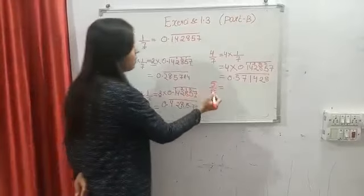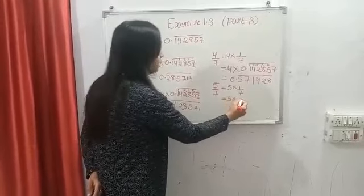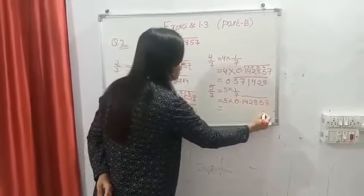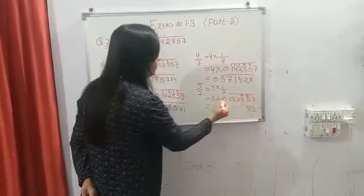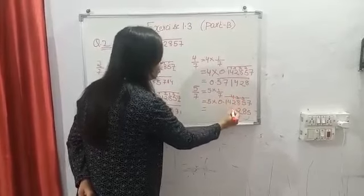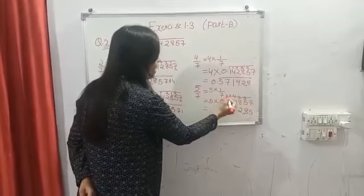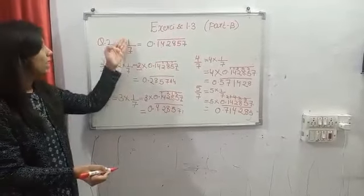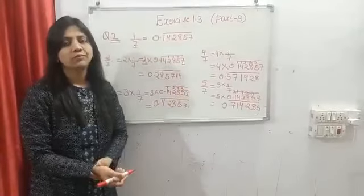The last one is 5 by 7, which equals 5 multiplied by 0.142857 bar. 5 times 7 is 35, write 5 carry 3; 5 times 5 is 25 plus 3 is 28, write 8 carry 2; 5 times 8 is 40 plus 2 is 42; 5 times 2 is 10 plus 4 is 14; 5 times 4 is 20 plus 1 is 21; 5 times 1 is 5 plus 2 is 7. So you will get 0.714285. In this way, if you know the value of 1 by 7, you can find the value of 2 by 7, 3 by 7, 4 by 7, and 5 by 7 without doing long division.